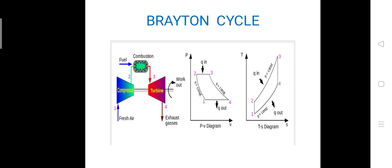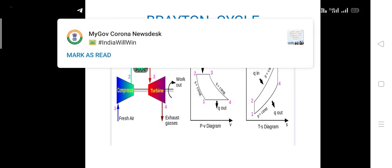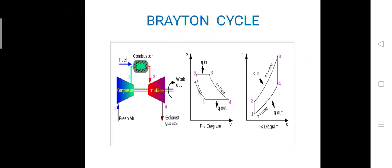See the diagram. Number one is the fresh air entering the compressor. The compressor compresses the air, and then it goes to the combustion chamber. Parallelly, the fuel has been sprayed inside the combustion chamber. The hot gases coming out — that is number three — enter the turbine. The turbine rotates, which rotates the generator, giving us power. The exhaust gases then go to the atmosphere.